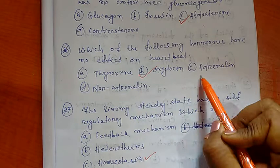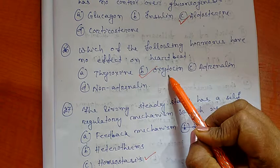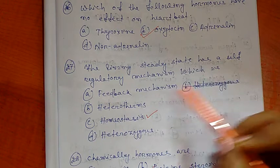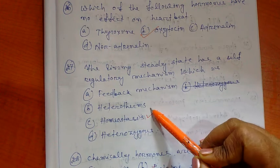Question number 27: The living steady state has a self-regulating mechanism which is. Options are A) Feedback mechanism, B) Heterotherms, C) Homeostasis, and D) Heterogamous. So the right option is homeostasis. Homeostasis is maintaining balance or steady state inside the body.